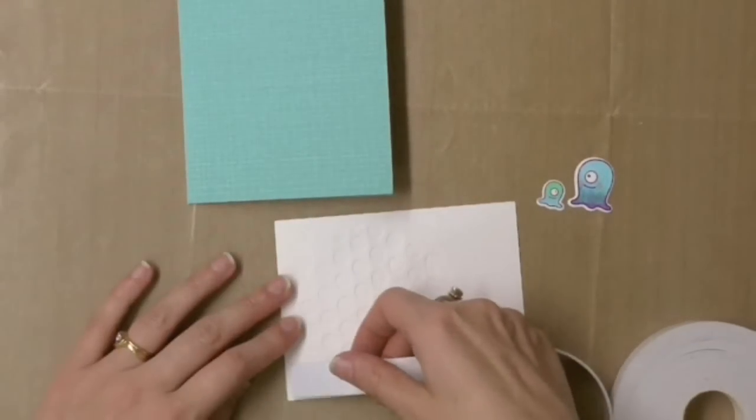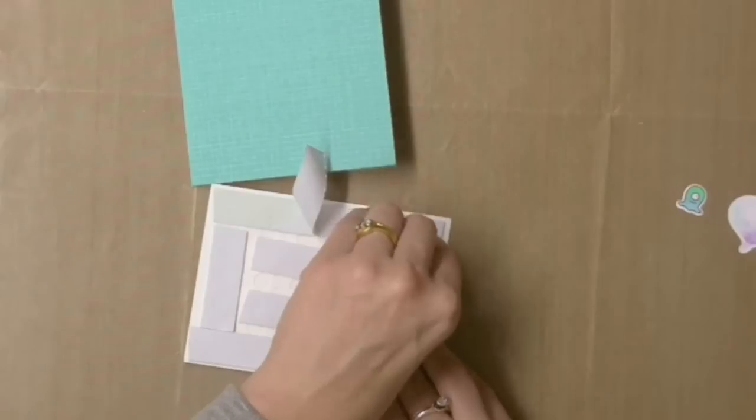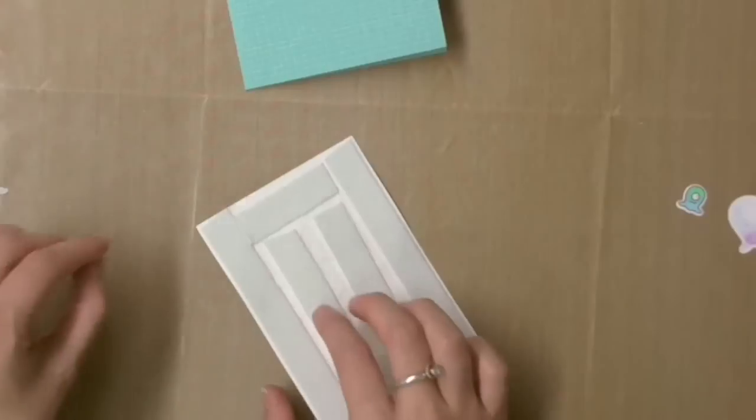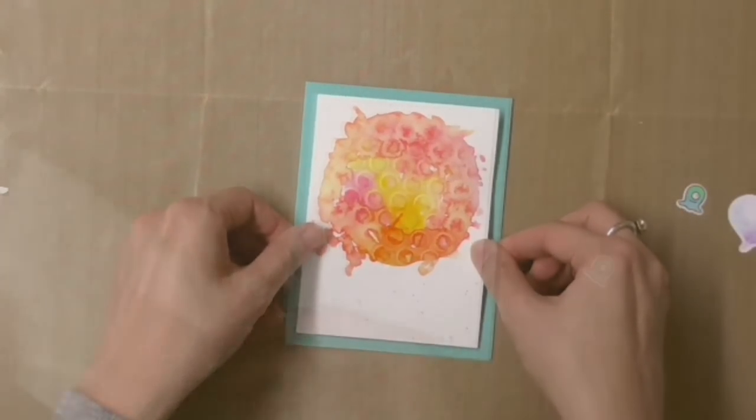To make sure I get rid of most of the warping I'm using some foam tape and I'm pretty much going to cover the whole panel. When I stick this onto the cardstock then you won't notice the warping from the card.